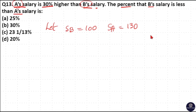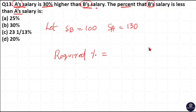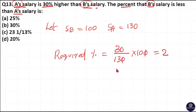We need to find out how much percentage B's salary is less than A's salary. The difference between A's salary and B's salary is 130 − 100 = 30 rupees. B's salary is 30 rupees less than A's salary. To convert in terms of percentage: 30/130 × 100. 13 goes 2 times in 30 with remainder 4; 13 goes 3 times in 40 with remainder 1/13. So option C is your answer.